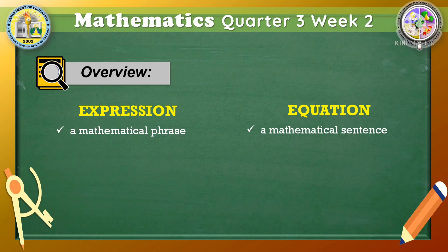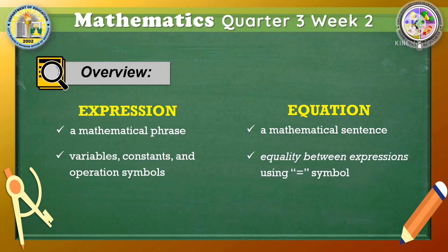Second, both expression and equation include variables, constants, and operation symbols. However, only an equation uses the is equal to symbol since it indicates equality between expressions.